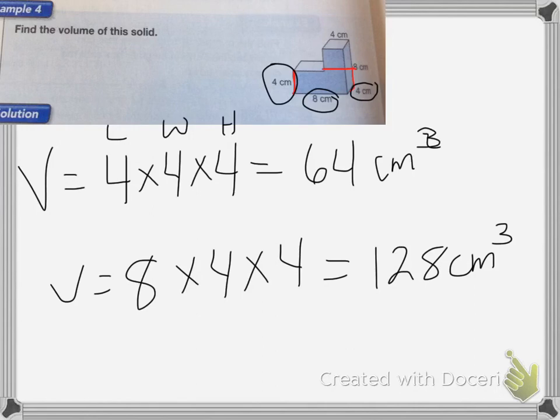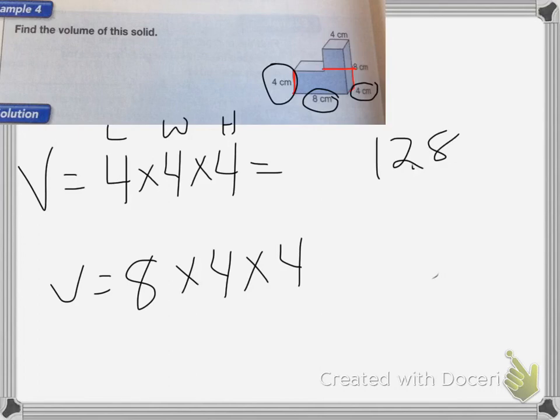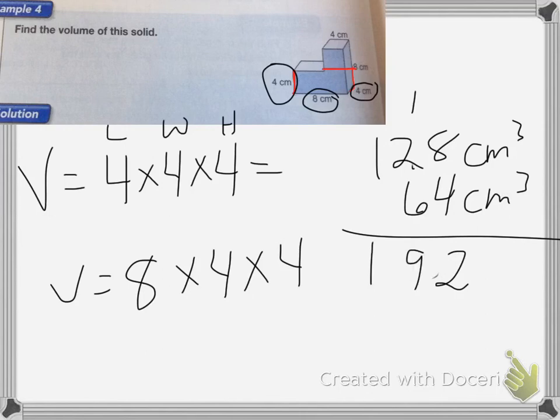Now I'll add that together. So 128 plus 64 is equal to... 8 plus 4 is 12, carry the 1, 6 plus 3 is 9, plus 1. So my answer is 192 centimeters cubed for the volume of this entire solid. And that's it for this lesson.